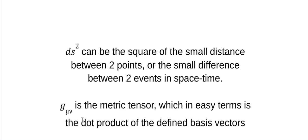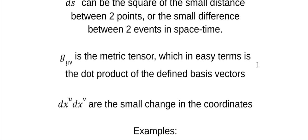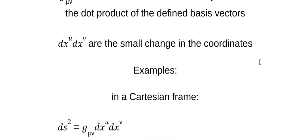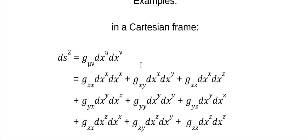Now what's the metric tensor? Well, in easy terms, it's just a dot product to define the basis vectors. Think of it as a matrix, because its elements are a matrix of the dot products of all the permutations of the basis vectors. Here's an example: in a Cartesian frame, using this equation, you're going to get nine elements — all the permutations of x, y, and z across the rows and columns. That's the way it works.